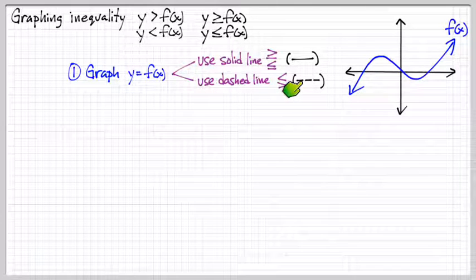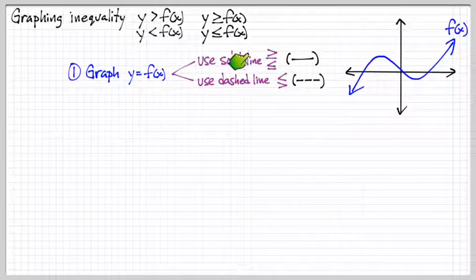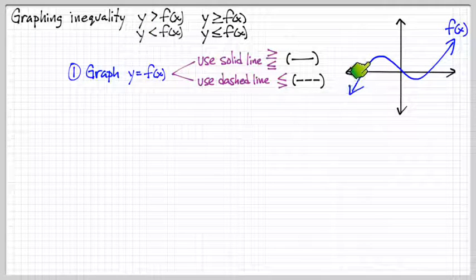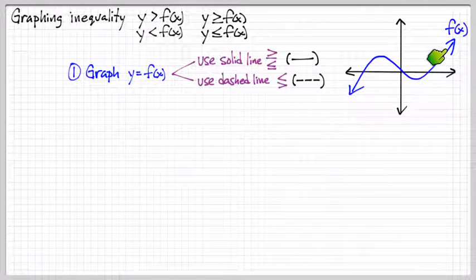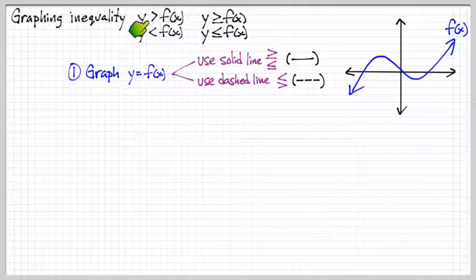But we use a dashed line when it's strictly greater than or less than, because points that were actually on this curve here will not satisfy this because we don't have an equal sign.